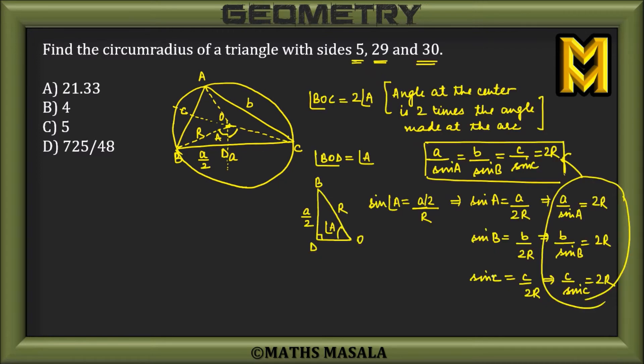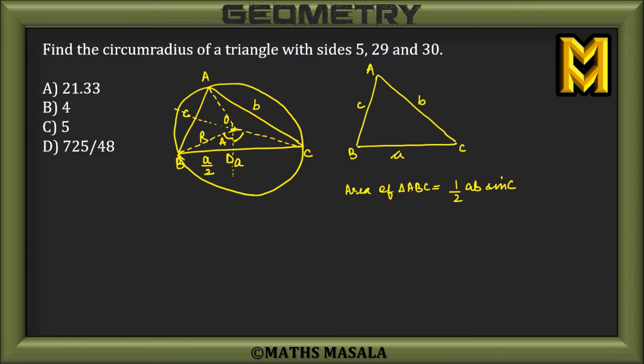Now, in the previous result, I have already seen that sin C is c/2R. So I can say area of this triangle, Δ, would be (1/2)abc/2R. So area of this triangle would be